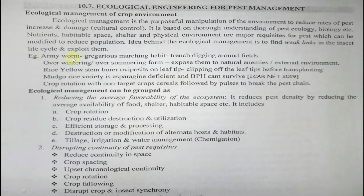For example, RUR (Red Ants) have a gregarious marching habit, so trench digging is possible. Overwintering or over-summering forms can be exposed to natural enemies through deep summer plowing. For rice yellow stem borer, oviposition occurs on the leaf tips, so clipping of rice leaf tips helps. The Murgo variety is asparagine-deficient, so growing it and using crop rotation with non-target crops breaks the continuous growing of the same host, disrupting the pest development chain.